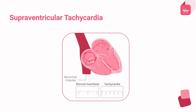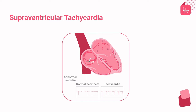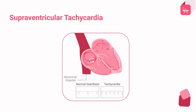Supraventricular tachycardias (SVT) involve at least some part of the atrium or atrioventricular junction. SVT is a very common group of arrhythmias which develops as a result of abnormal automaticity, triggered activity, or re-entry mechanism. It is characterized by a rapid heart rate of 120 to 200 beats per minute and a rhythmic succession of QRS complexes. The QRS complex duration is typically narrow — less than 120 milliseconds — reflecting conduction over the AV node and His-Purkinje system, but can sometimes have a wide QRS complex due to pre-existent or rate-dependent bundle branch blocks or other aberrant interventricular conduction disturbances.